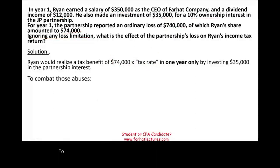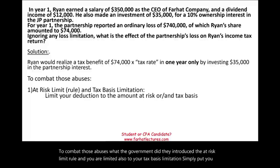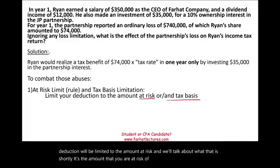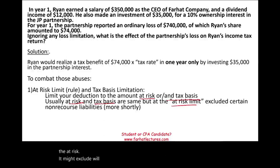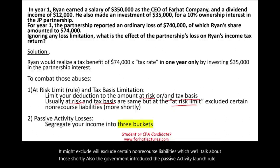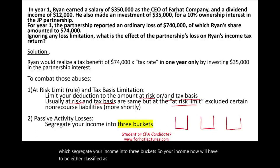To combat those abuses, the government introduced the at-risk limit rule, and you are also limited to your tax basis limitations. Simply put, your deduction is limited to the amount at risk — the amount you are at risk of losing — or your tax basis. Usually the at-risk and the tax basis are the same, but the at-risk limit will exclude certain non-recourse liabilities, which we'll discuss shortly. The government also introduced the passive activity loss rule, which segregates your income into three buckets: active, passive, or portfolio income.